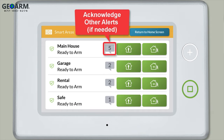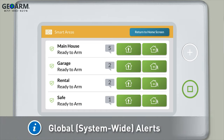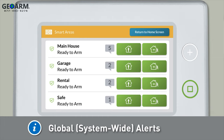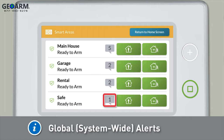Acknowledge alerts for any other smart areas if needed. Note, global system-wide alerts, which affect all smart areas, will generate separate alerts in each of the individual smart areas. Global alerts must be acknowledged one by one in each individual smart area.